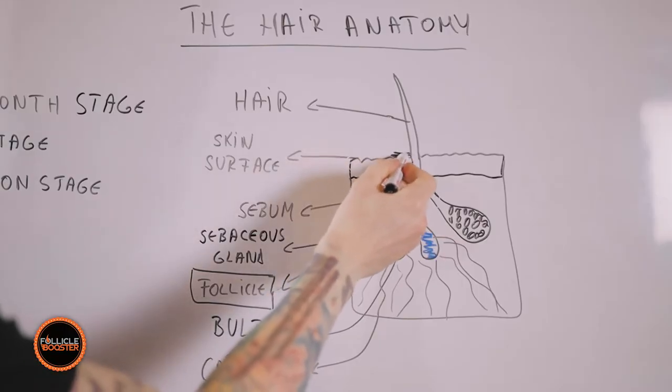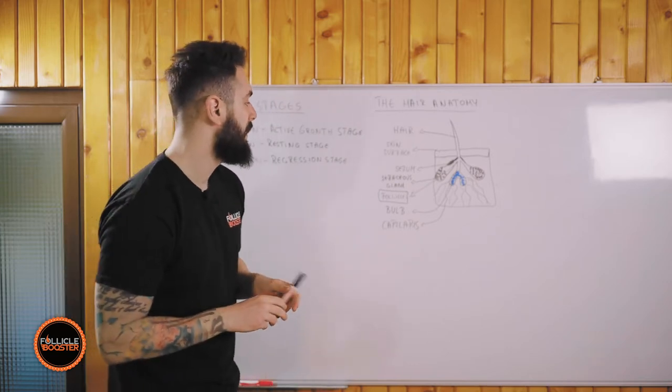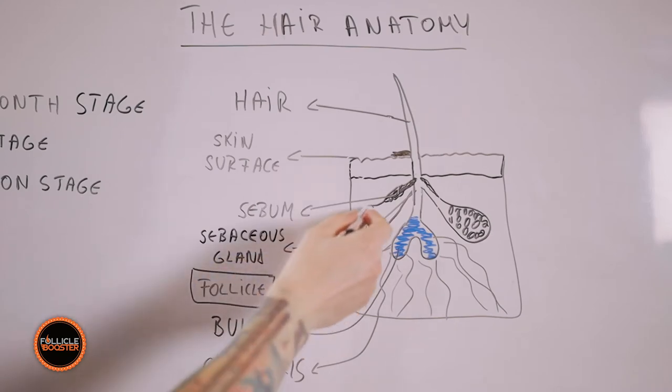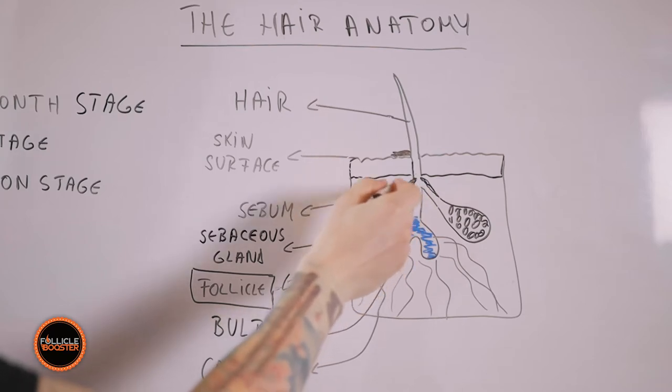Sebum is not that good for your head but for your beard is very good. The fourth one is the sebaceous glands. They're actually producing all the sebum that is healthy for your beard.